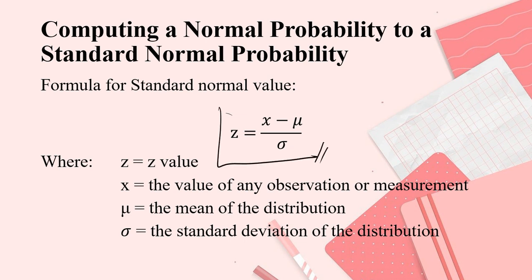We have Z is equal to X minus mean divided by S. Where Z is the Z value, which is in our table. X is the value of any observation or measurement. Mean is the mean of the distribution, this is called mu. And then this is the symbol for the SD, the standard deviation of the distribution.